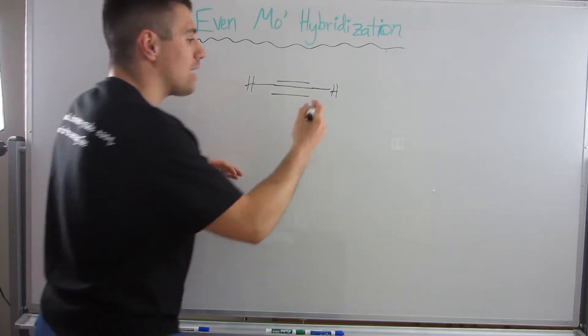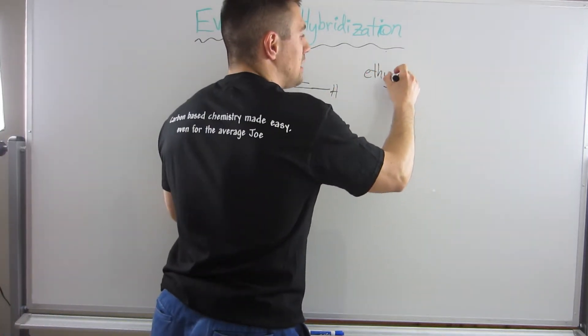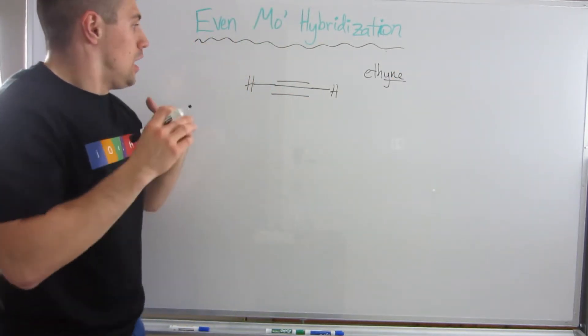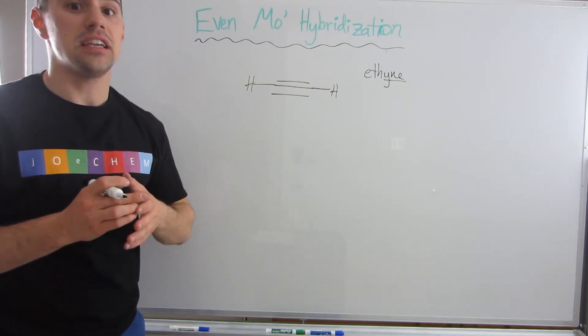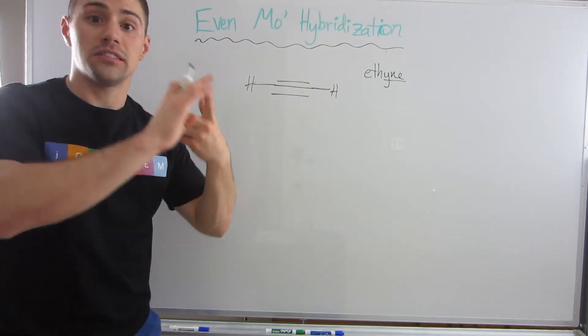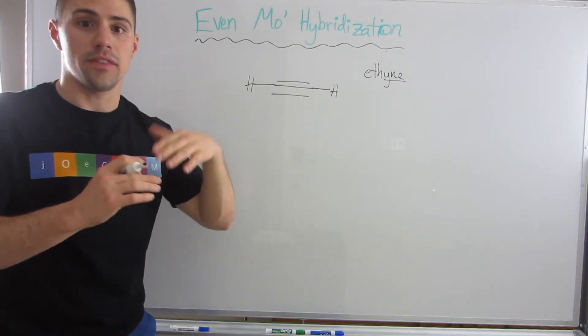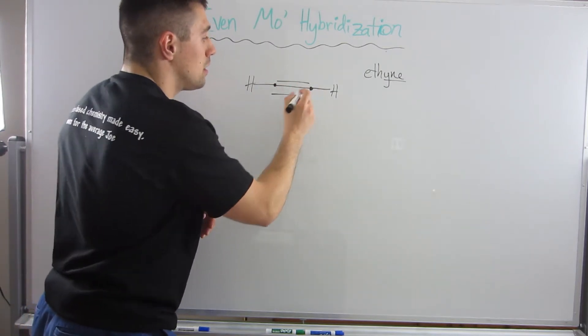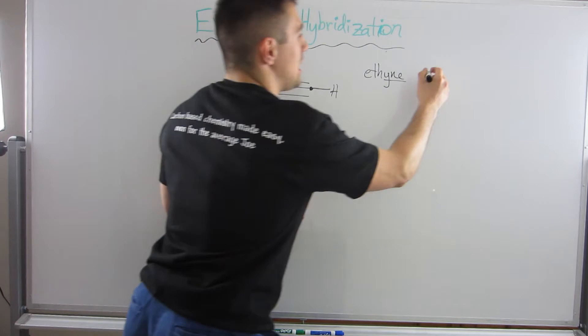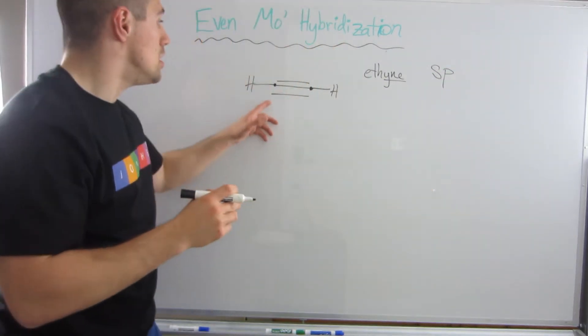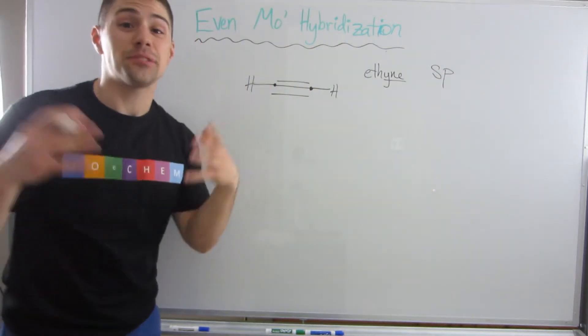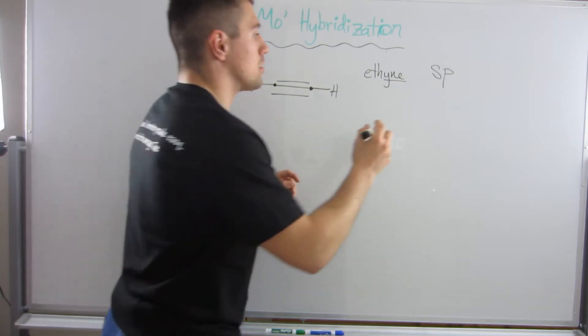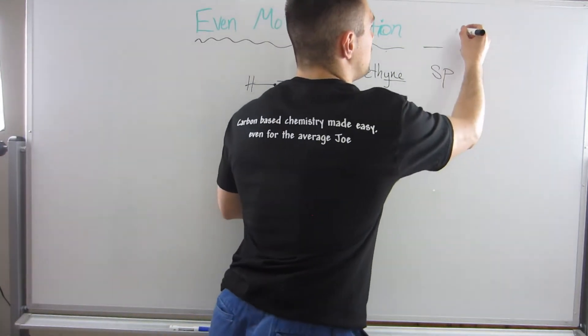Here we have ethine—two carbons, but not ethene this time. Now we have an alkyne with a triple bond. Let's start by assigning hybridization, because that will lead us to how many sigma bonds, pi bonds, and all that good stuff. Both carbons are equivalent and have two bonding areas, so I need an s and a p to make hybrid orbitals. Both of these carbons are sp hybridized.